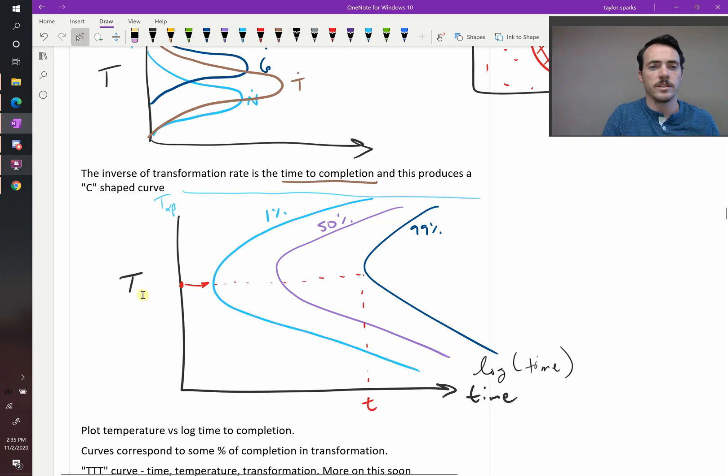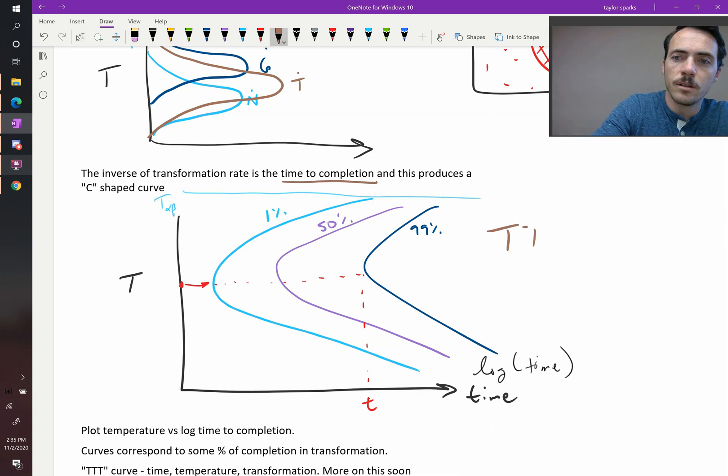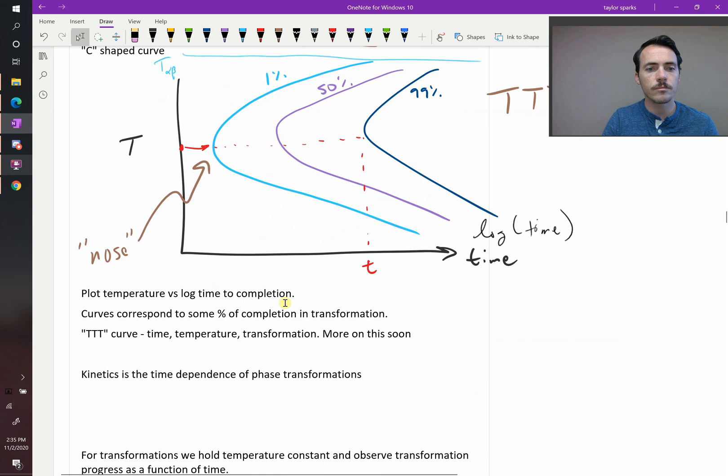The y-axis is not log scaled. But there exists, well, they'll call this the nose of the curve. In fact, they'll call these diagrams TTT curves, TTT for time temperature transformation. And this point right here that it's pointing at, that's the nose of the curve. The nose of the C-shaped curve, or these TTT diagrams.